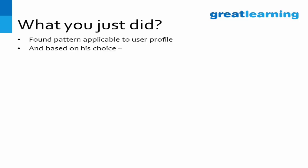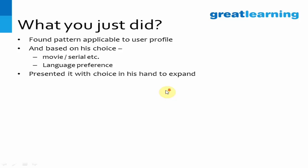Based on his choice of movie or serial and his language preference, you searched only the relevant part of your database. Using his preference and profile, you presented a result with an option to expand and see more than 10. So you found a pattern and displayed it — that is nothing but analytics. You found a pattern based on a specific need: to recommend a new customer what he can watch.